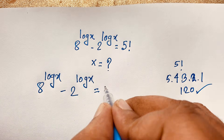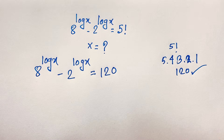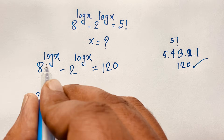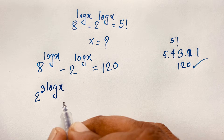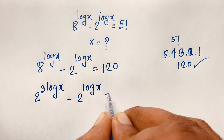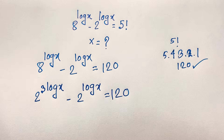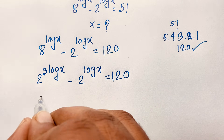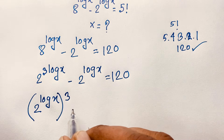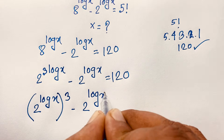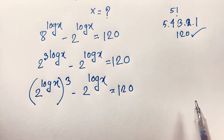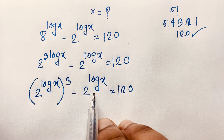So 5 factorial equals 120. Now the equation becomes: 2 to the power 3 times log x minus 2 to the power log x is equal to 120. Equivalently, this expression is 2 to the power log x, whole to the power 3, minus 2 to the power log x is equal to 120. Notice that 2 to the power log x is common in both terms.